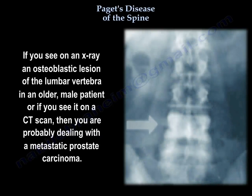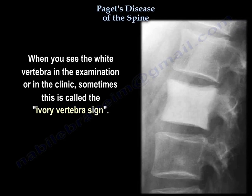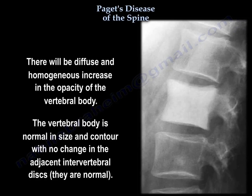If you see on an x-ray or CT scan an osteoplastic lesion of the lumbar vertebra in an older male patient, you're probably dealing with metastatic prostate carcinoma. When you see the white vertebra on examination or in the clinic, it is sometimes called the ivory vertebra sign. There will be a diffuse and homogeneous increase in the opacity of the vertebral body. The vertebral body is normal in size and contour, with no changes in the adjacent intervertebral disc.